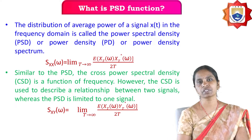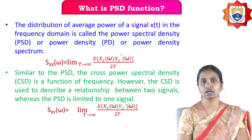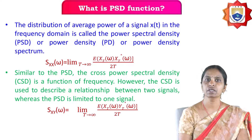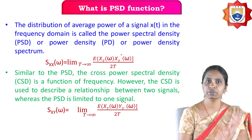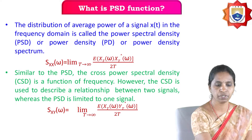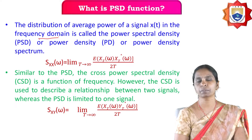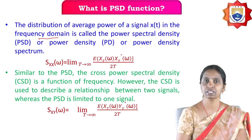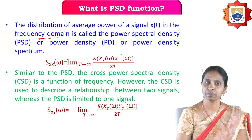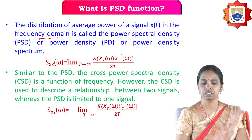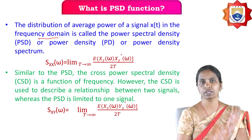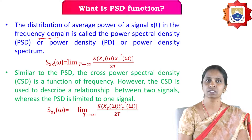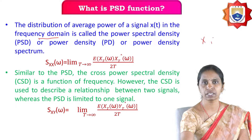Before that, let us revise what is power spectral density and cross-power spectral density, what is autocorrelation and cross-correlation. What is power spectral density? Power spectral density, also called power density spectrum, describes the distribution of average power with respect to frequency. It describes how the average power of a signal is distributed with respect to frequency. This same concept can also be applied to a random process. A random process is a function of both the random variable and the time variable.